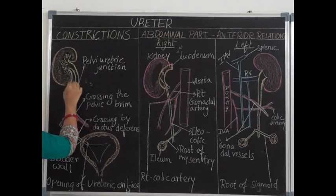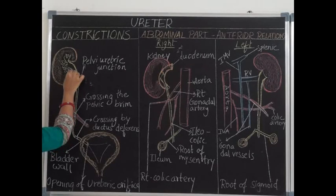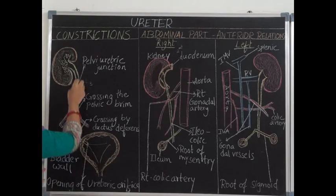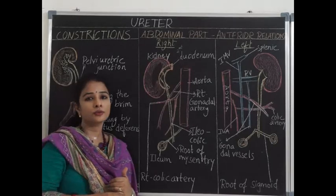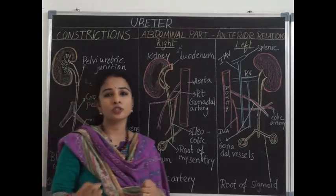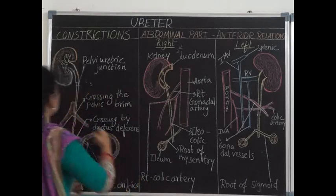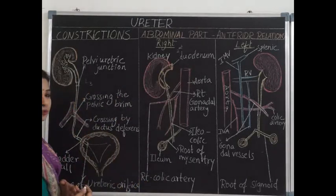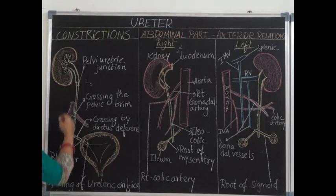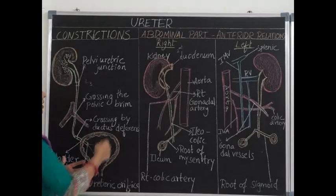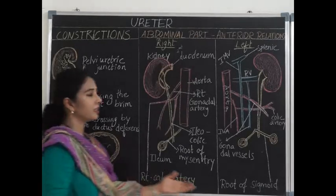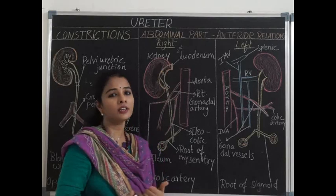After crossing the lower pole of the kidney, the ureter lies along the medial border of the kidney. Posteriorly, it is related to the transverse processes of the lumbar vertebrae and rests over the psoas major muscle. The posterior relations on the right and left sides are almost the same, but the anterior relations differ because the abdominal organs are different on each side.